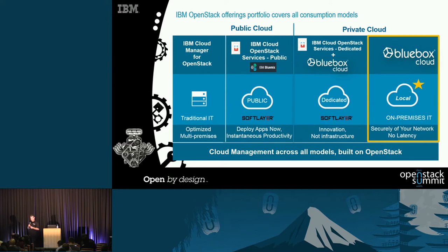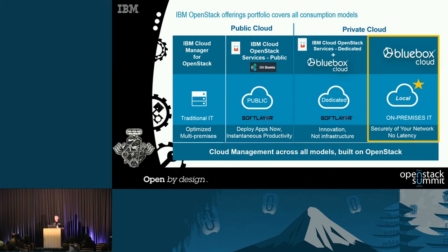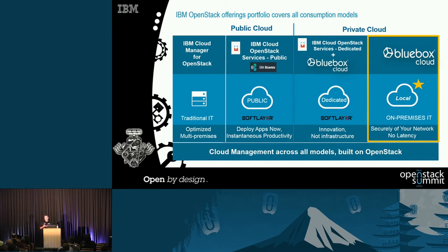We took that product, which was running in our own four Blue Box data centers around the world, and pivoted — leveraging what we have with IBM and SoftLayer's 27 to 30 data centers around the world, we moved it onto SoftLayer. 90 days later, we had that. We then took that expertise and deployed it locally — inside customers' own four walls, whether their own data center, a colocation of their choosing, or an IBM data center. This week, we announced the GA of Blue Box Local.